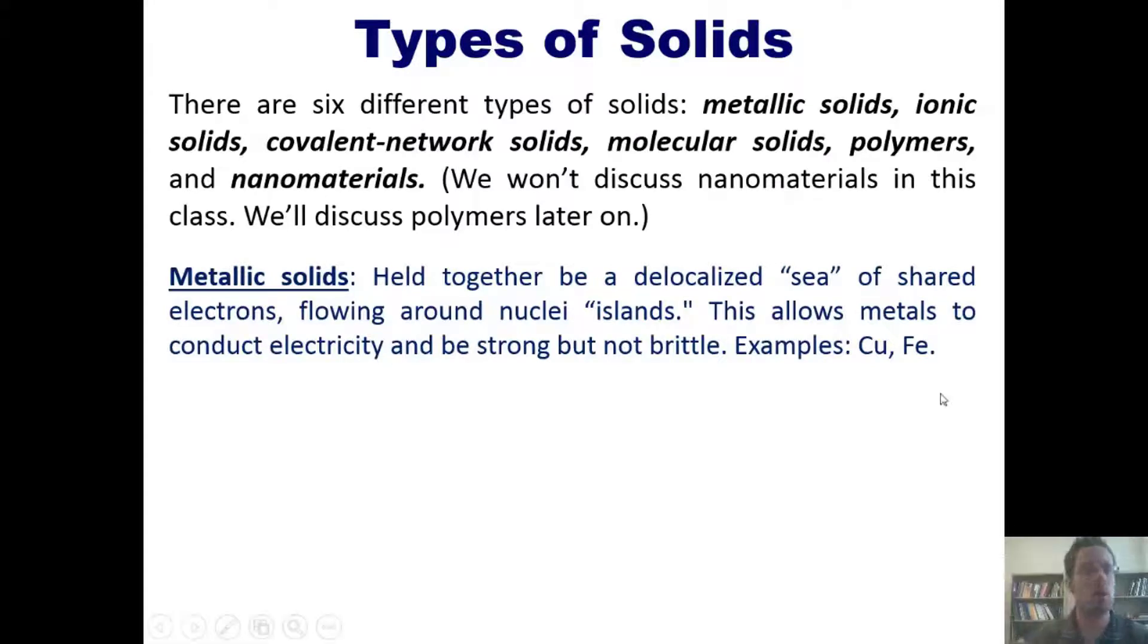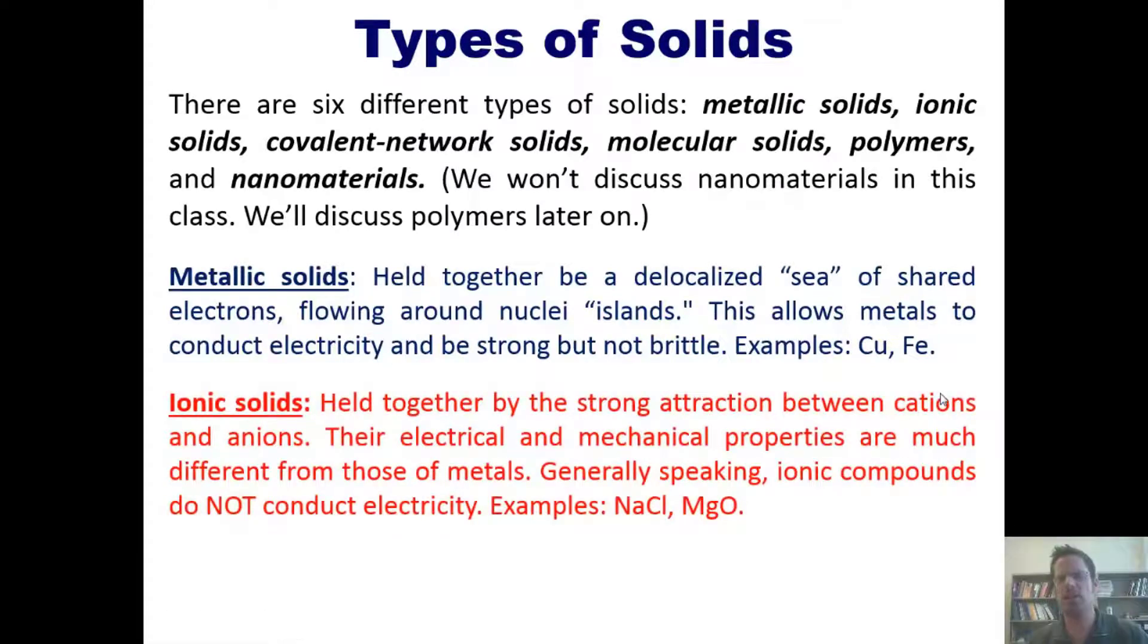Now to ionic solids. Ionic solids are held together by strong attractions between cations and anions. Their electrical and mechanical properties are much different from those of metals. Generally speaking, ionic compounds do not conduct electricity. Examples include sodium chloride and magnesium oxide.